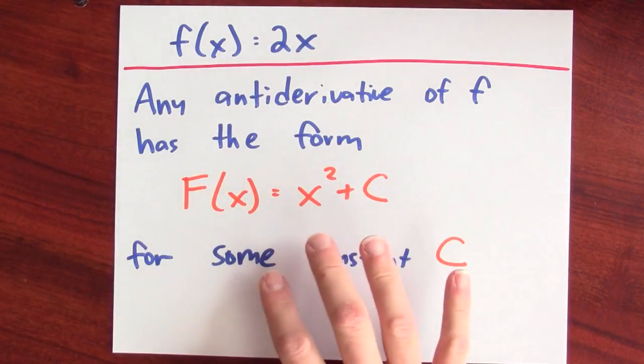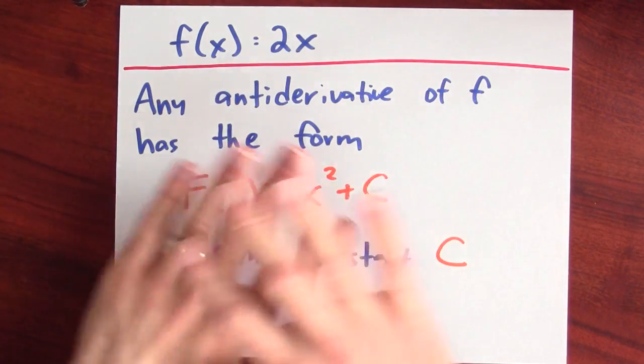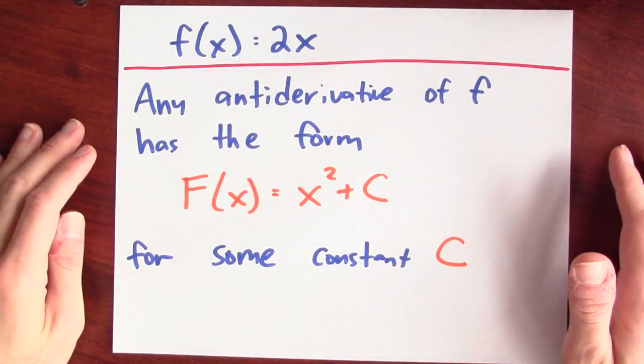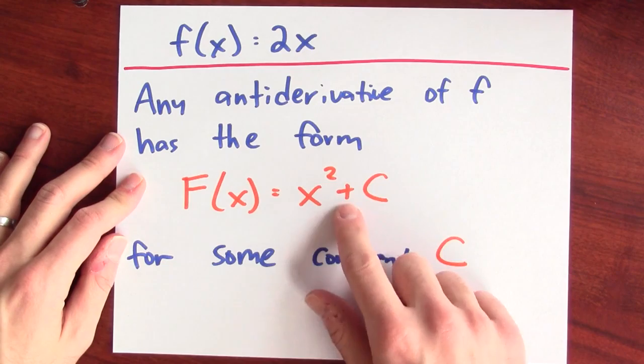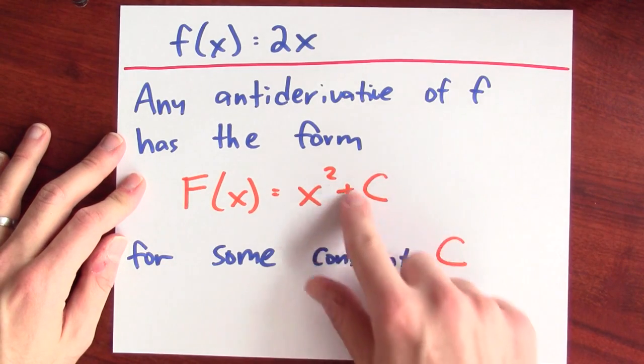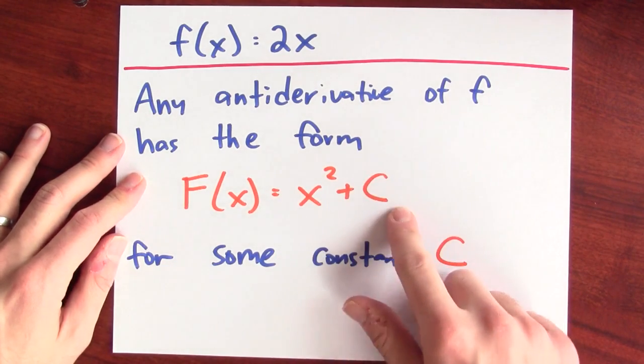Any other antiderivative is just x² plus some fixed number. How do we know this? It goes back to the Mean Value Theorem.